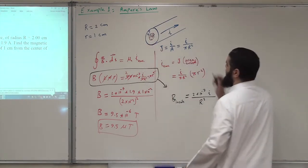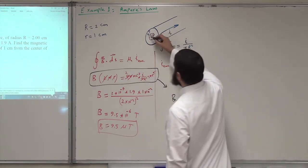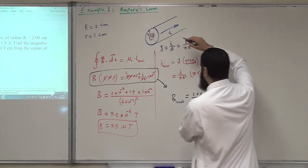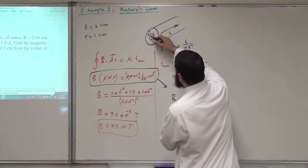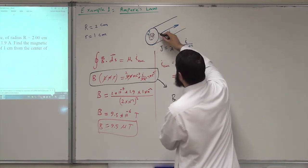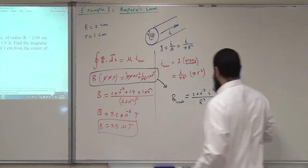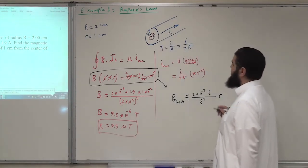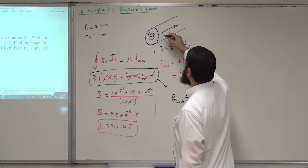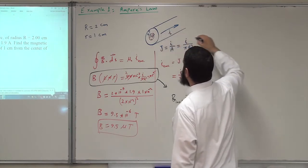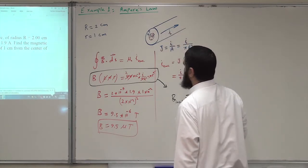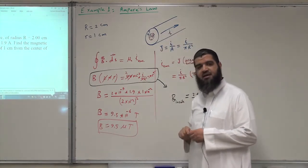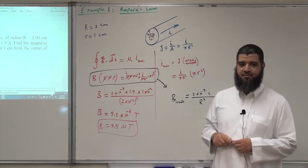As we move away from the center, the magnetic field will increase, increase, increase until it reaches the maximum value at the surface. Of course, when we get out of the surface and move away from the wire, the magnetic field will start decreasing. This is the second example on Ampere's law.